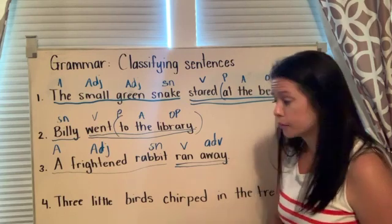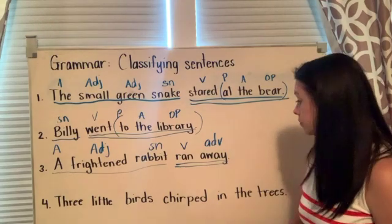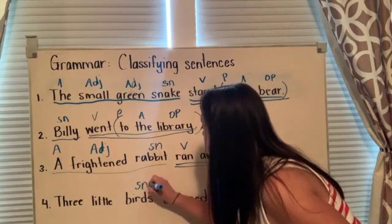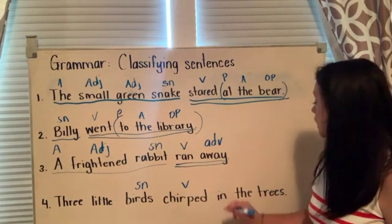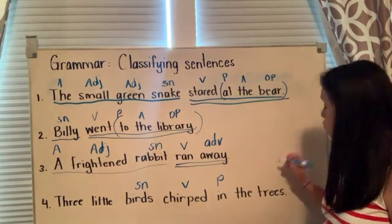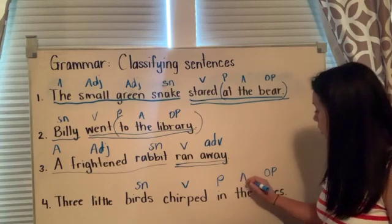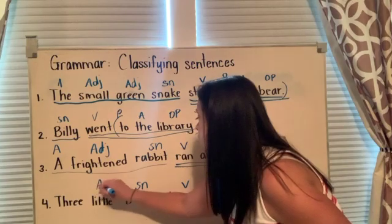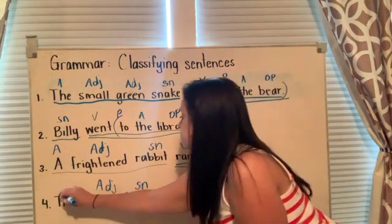Let's read number four: Three little birds chirped in the tree. What chirped in the tree? Birds. Subject noun. What is being said about birds? Birds chirped. Verb. In. Preposition. In what? Tree. Object of the preposition. The? Article adjective. What kind of birds? Little. Adjective. How many birds? Three. Adjective.